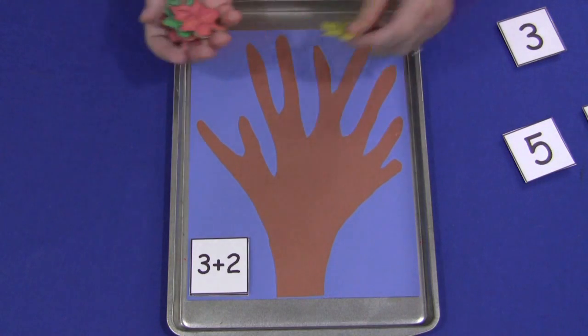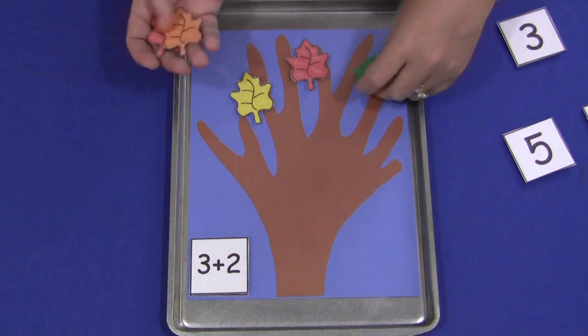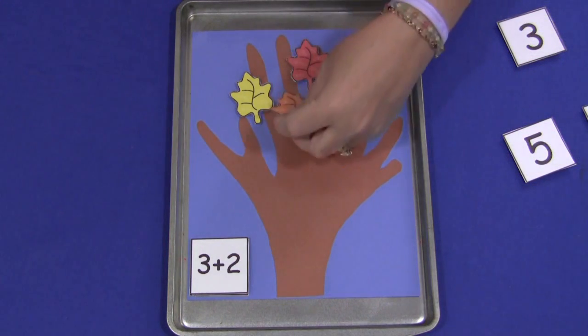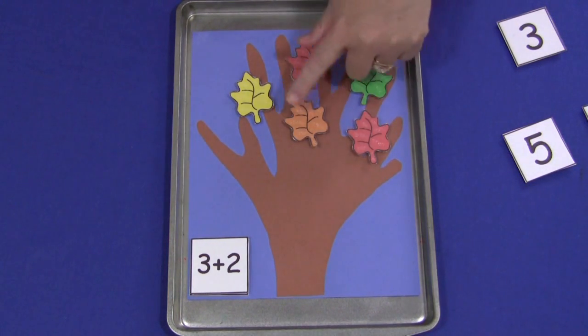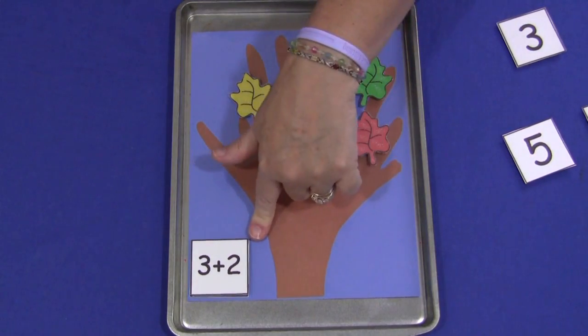The child would put down three leaves and then two leaves. Then they would count how many they have. One, two, three, four, five. Three plus two equals five.